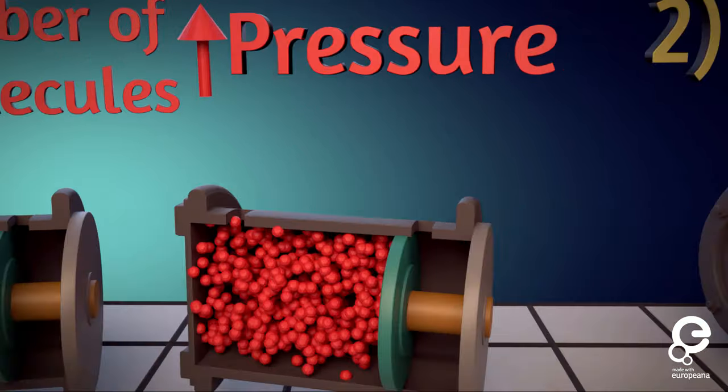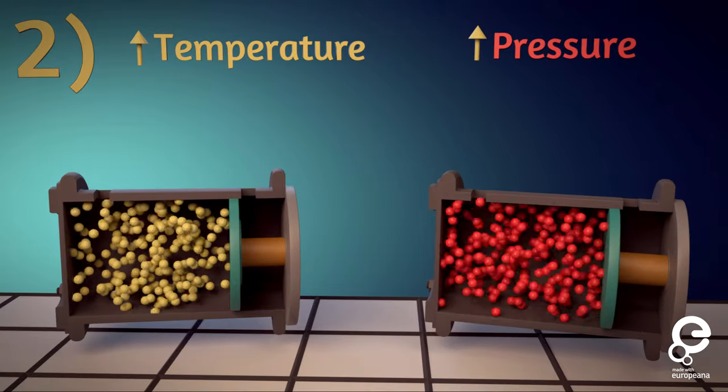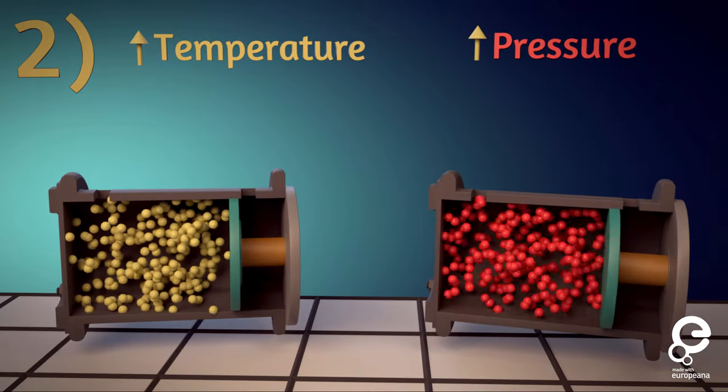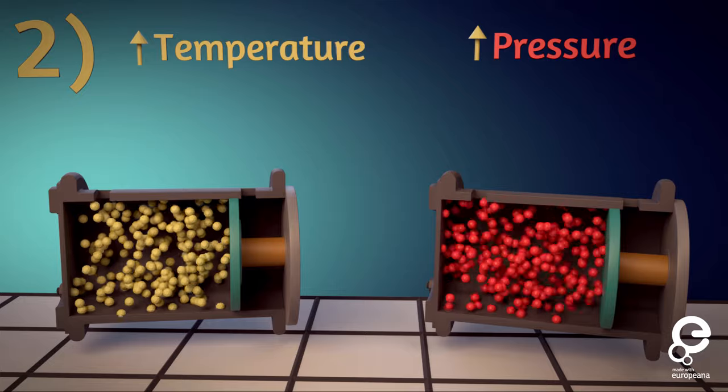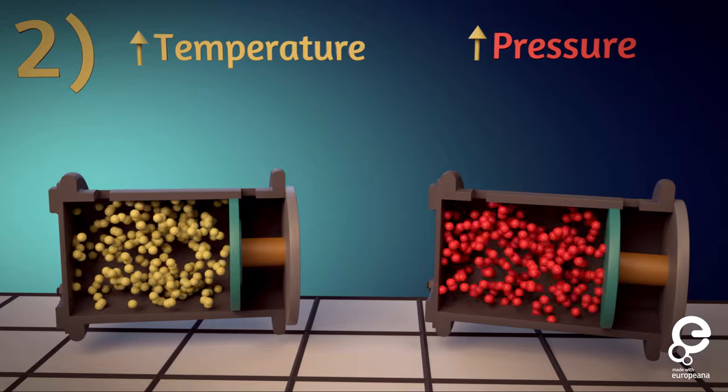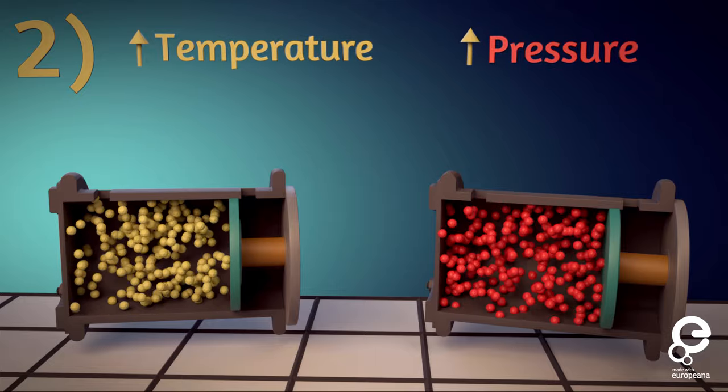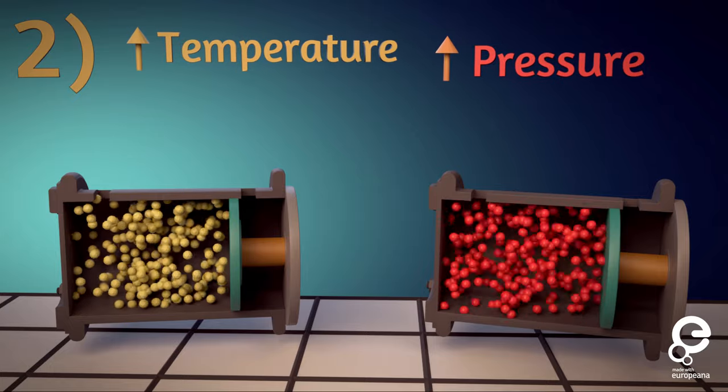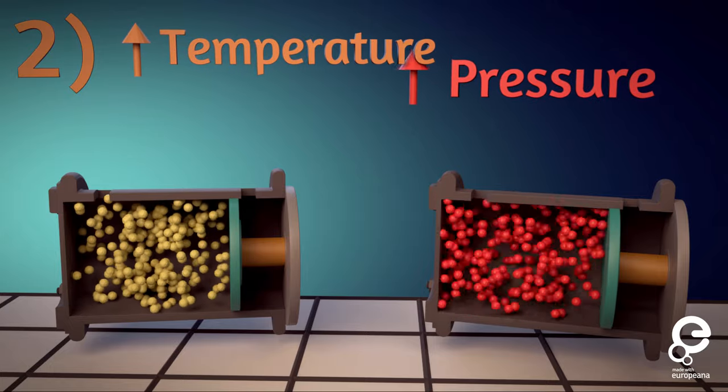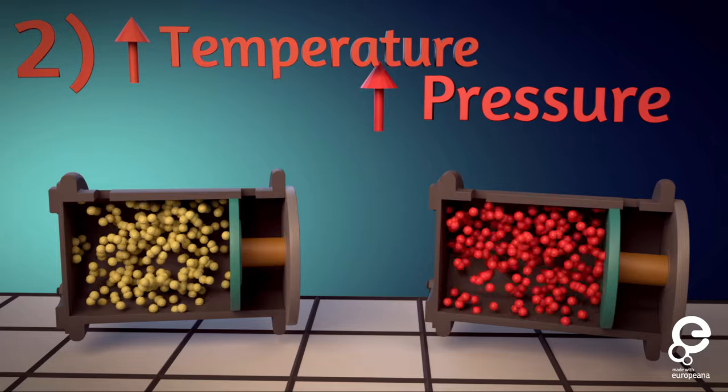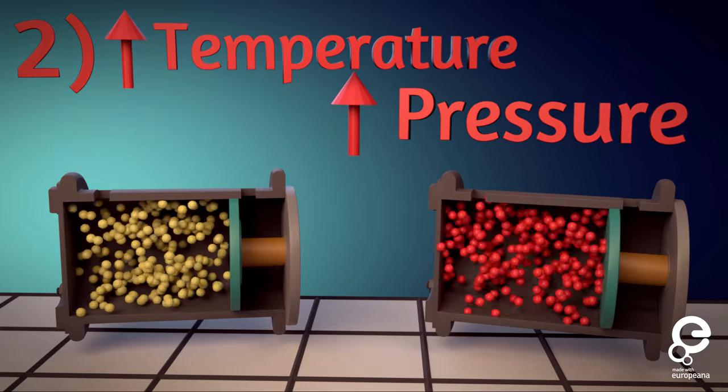The second way is to increase the temperature. Temperature is an average measure of how fast the molecules are moving, rotating, and vibrating. So, as you increase the temperature, you increase the average kinetic energy of the molecules, and consequently how much force each molecule imparts when it bounces off the piston.